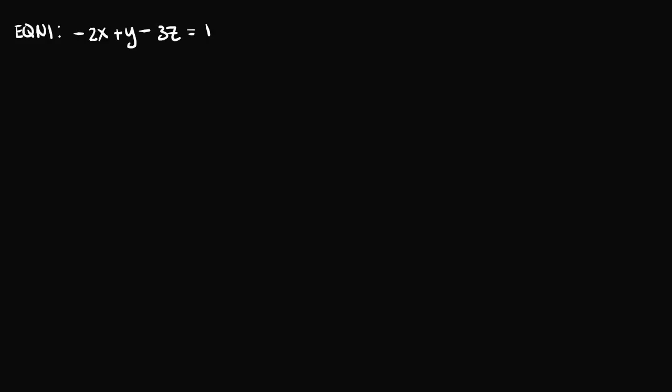In this first example, equation 1, we have negative 2x plus y minus 3z is equal to 1. This is a linear equation with three different variables. When we come across something like this, we usually try to solve for one variable in terms of the other variables. We could choose any of the three variables and solve for that variable in terms of the other two.